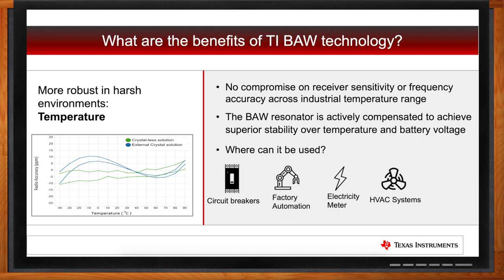One additional example is asset tracking for the transport of cold-chained goods — refrigerated goods. Users like to have a sensor to monitor that temperature has remained stable during transport. In this low-temperature environment, the crystal-less wireless MCU solution will maintain greater stability. And with no crystal, this also makes the board layout simpler.